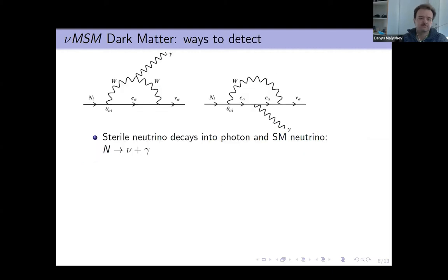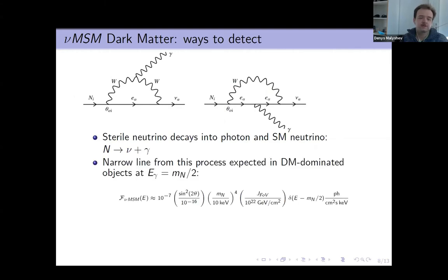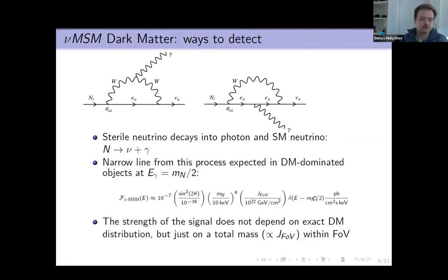To detect sterile neutrino decays, if we observe some astrophysical object we expect to have a narrow line which originates from decay of sterile neutrino over usual neutrino and gamma ray photon. In this case, we expect the signal to be a narrow line located at energy of half of neutrino mass with the flux corresponding to this formula. Here you see that we also have this J factor or D factor for decaying dark matter, which corresponds to the total dark matter mass in the field of view.